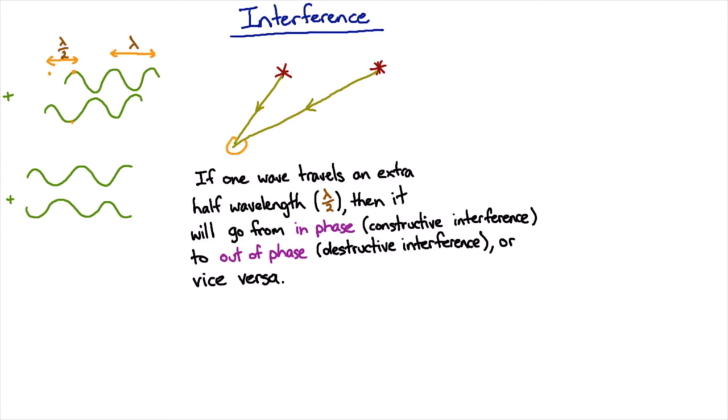And so we're either going to get constructive or destructive interference or something in between. That depends on what's called the path difference - the difference in how far the two waves have to go to get there. So this distance here, if that's an odd number of half wavelengths, then they're going to be out of phase and you're going to get destructive interference.